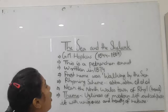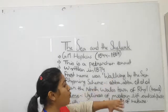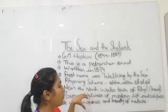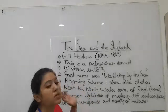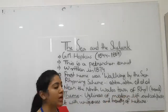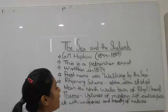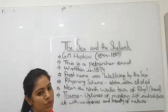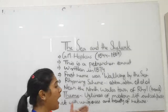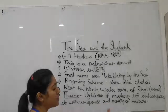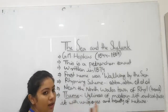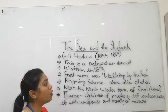Ye poem written in 1874, aur jo sabse pehle jab ye poem publish hui thi, toh iska naam tha 'Walking by the Sea,' then iska naam 'The Sea and the Skylark' kar diya gaya. Ye near the North Wales — Wales mein jab unhone yeh poem likhi, toh woh ek Welsh university ke student the. Wahan pe ek beach tha jiska naam tha Rhyl — wahan se nature beauty dekh ke yeh poem likhi. Isme theme hai ugliness of modern life, aur us ugliness ko compare kiya gaya hai nature ki beauty se — sea se, skylark se — jo modern life hai unko compare kiya gaya hai.